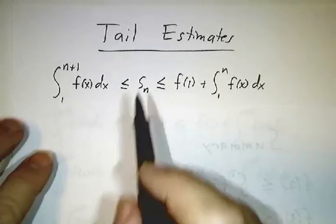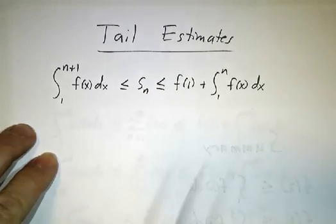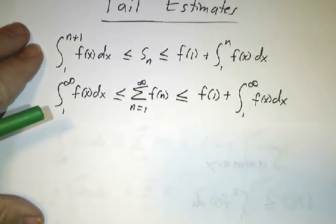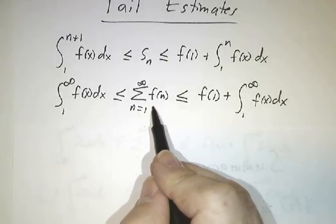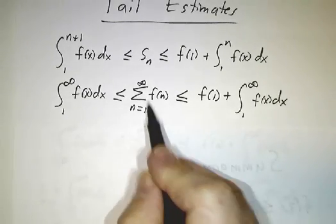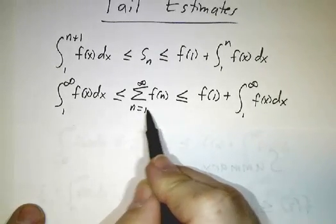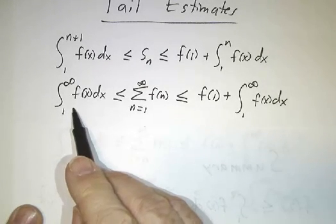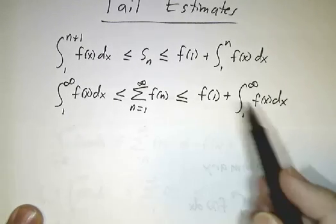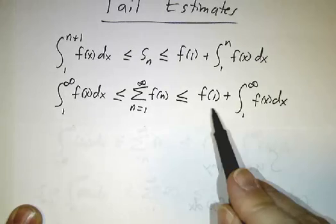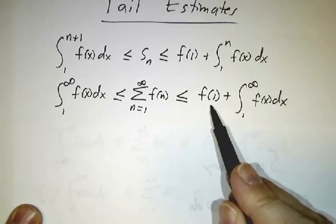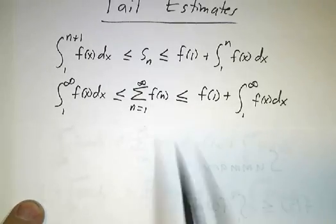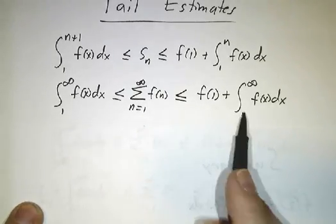So that means that sn is somewhere in between these two guys. Now we take a limit as n goes to infinity and we get that the sum from n goes from 1 to infinity is at least as big as the integral. And it's at most the integral plus the first term. So that gives us a pretty good sense of how these infinite sums are behaving. They're behaving just like the integrals.